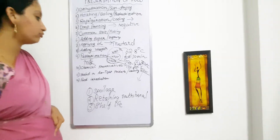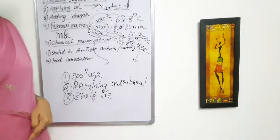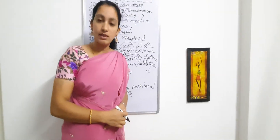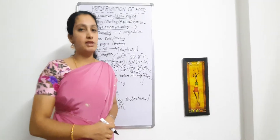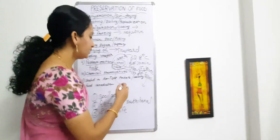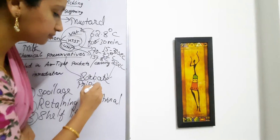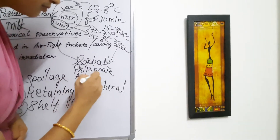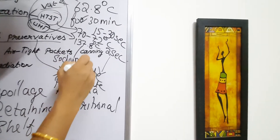We also have chemical preservatives. This is a chemical method where we use chemicals to preserve food and prevent spoilage. Commonly used chemical preservatives include sorbates, propionates, ammonia, and sodium metabisulphite.